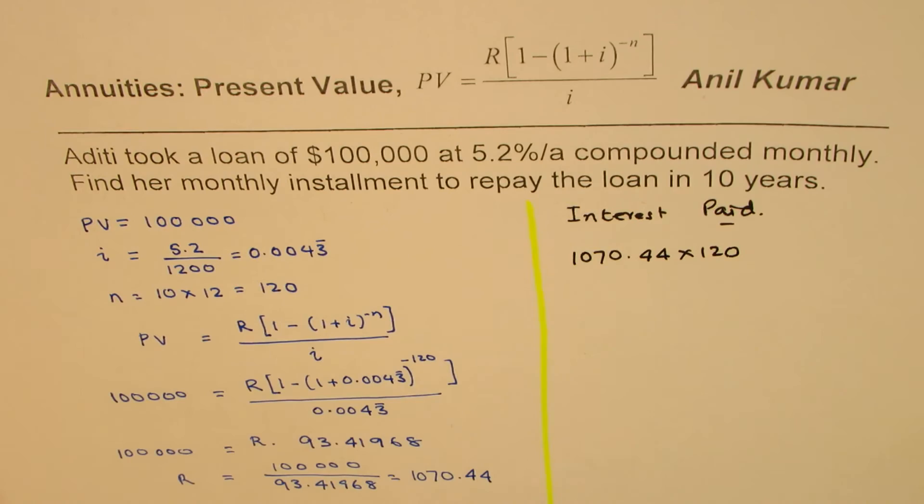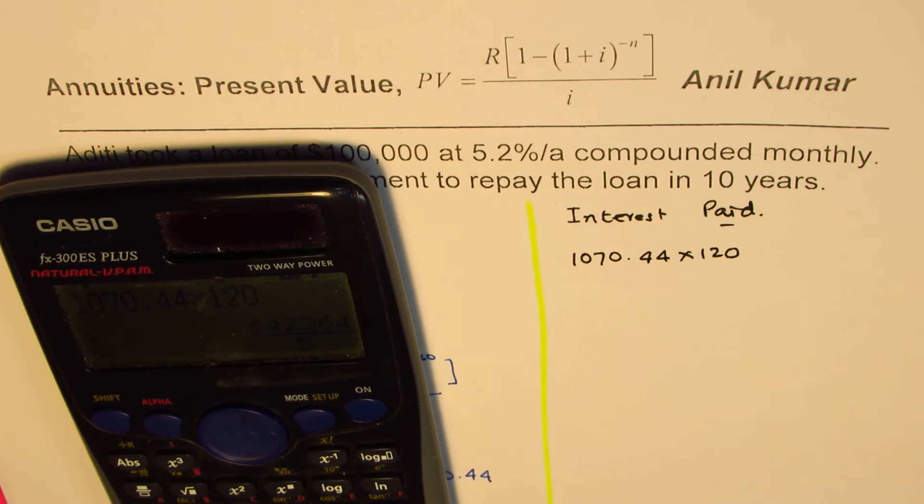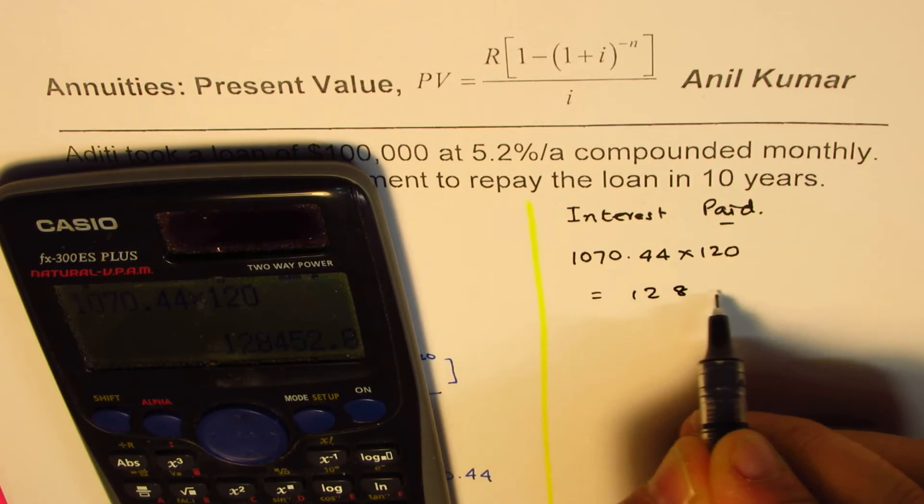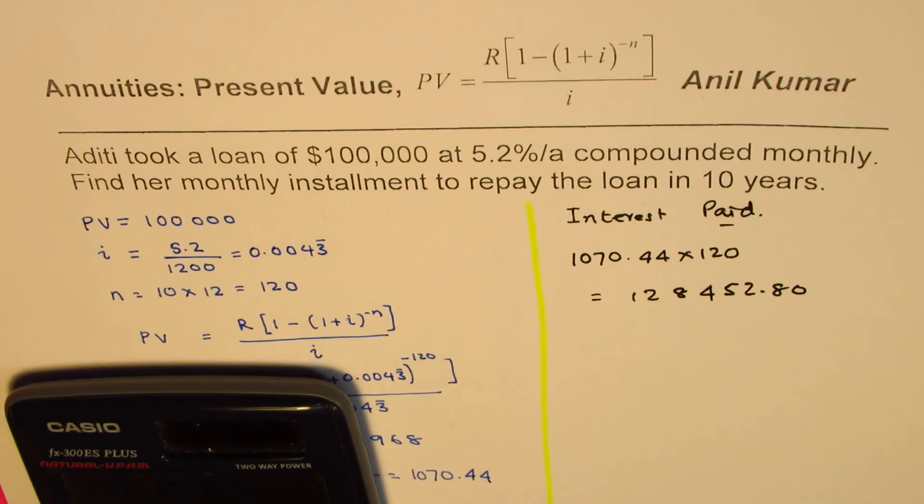So it is 1070.44 times 120 which equals 128,452.80. That is the amount paid. This is the amount paid, let me write separately.